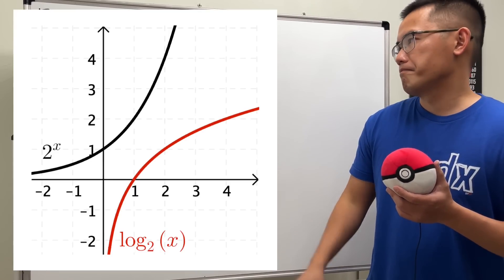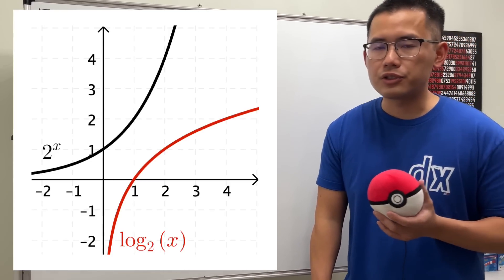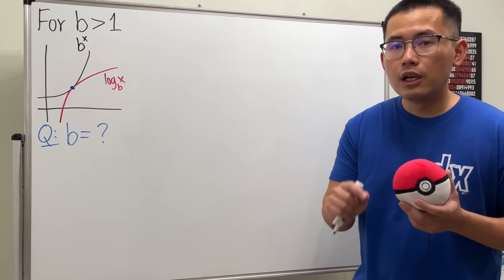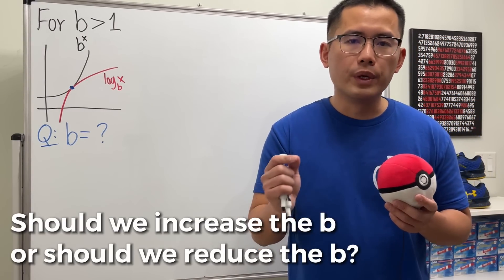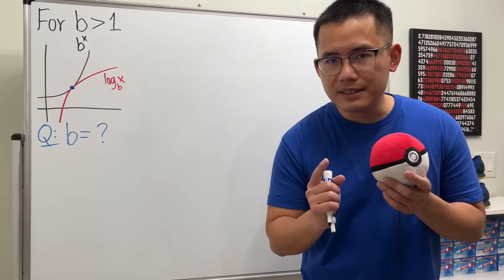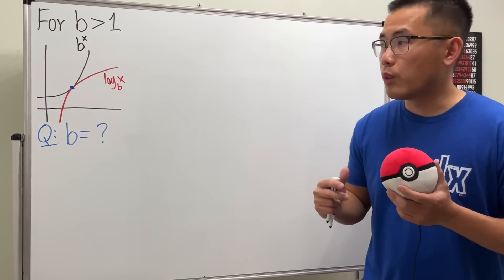Let's say if b is equal to 2, then we see that the curves don't touch. Now a quick question for you is: should we increase b or reduce b? The answer is we should reduce b, so let's try 1.5.